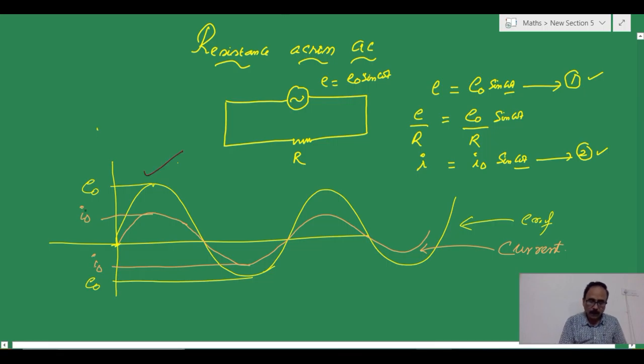So, this is for AC current. This is I not and this is for AC current I not in the opposite direction. If we observe the two graphs, when EMF reaches its maximum peak value, the current is also reaching the peak value. When EMF becomes 0, the current value is also becoming 0.